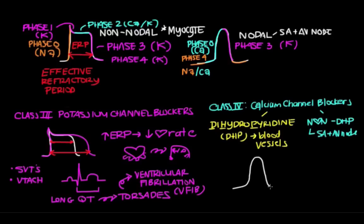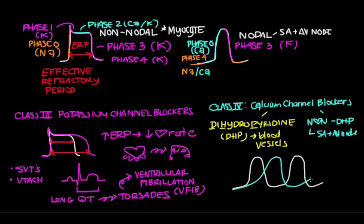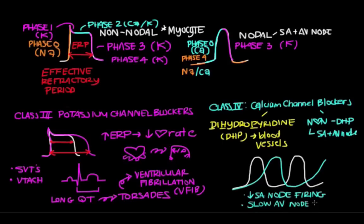In the nodal action potential, calcium channels are important at phase 0. When you have a calcium channel blocker on board, you'll hit threshold just as fast, but it's going to take you longer to go through phase 0. Therefore, you decrease firing at the SA node because it's taking longer to get through phase 0. Since they also work at the AV node, you slow down conduction there too. Both of these lead to a slower heart rate.